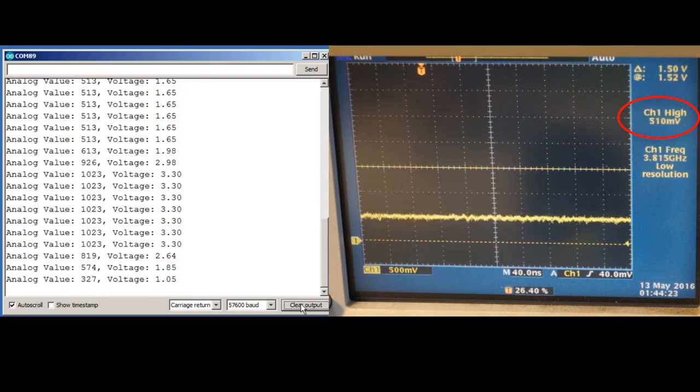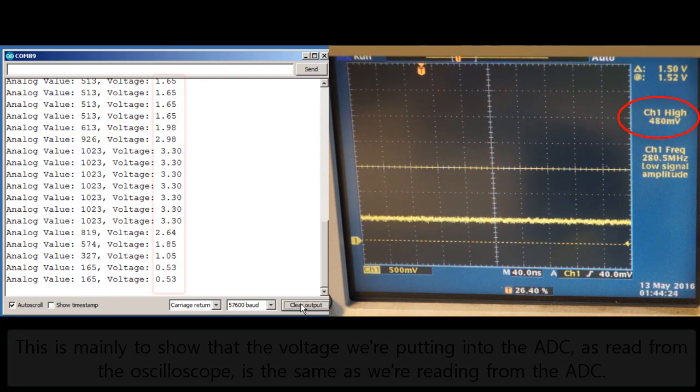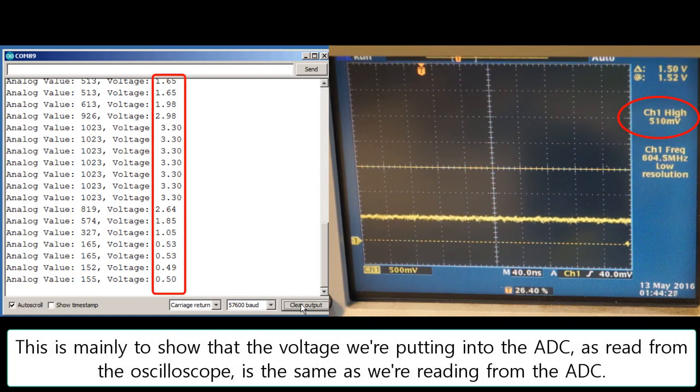Next, let's take it down to some arbitrary value, like 0.5 volts. You can see there's good correlation between our ADC and the scope.